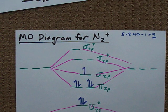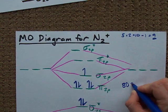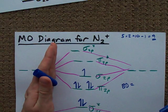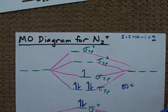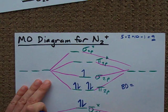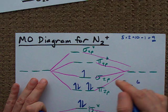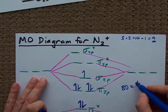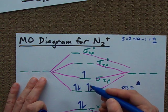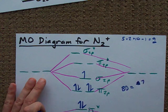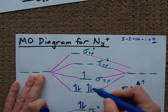That's the MO diagram for N2+. You may be asked for something called the bond order, which is the number of electrons in bonding orbitals minus the number of electrons in antibonding orbitals, divided by 2. In the bonding orbitals I've got 7 electrons. How many antibonding electrons? 2, and that's it.